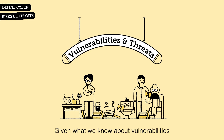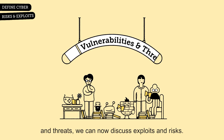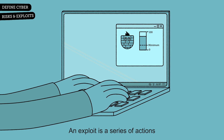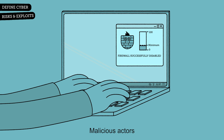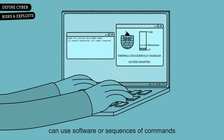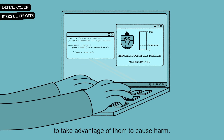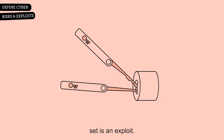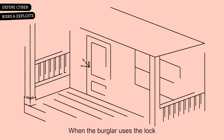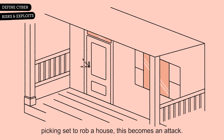Given what we know about vulnerabilities and threats, we can now discuss exploits and risks. An exploit is a series of actions which takes advantage of a vulnerability to cause harm. Malicious actors can use software or sequences of commands to take advantage of them to cause harm. For instance, a burglar's lockpicking set is an exploit. When the burglar uses the lockpicking set to rob a house, this becomes an attack.